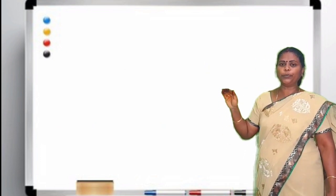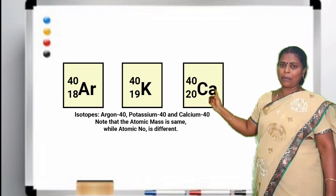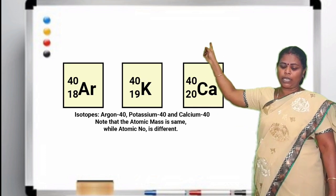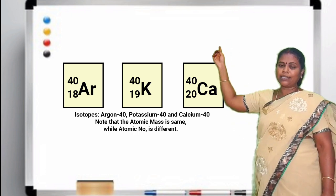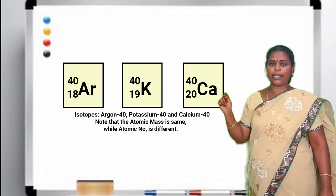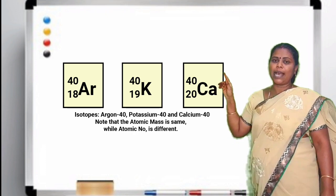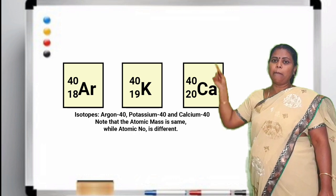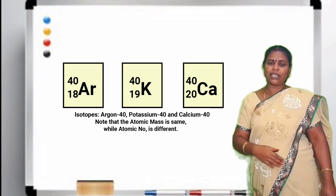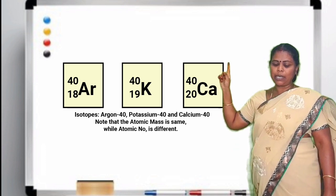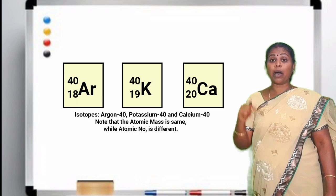Next example: potassium with atomic number 19 and mass number 40, and chlorine with atomic number 17 and mass number 40. Here both have different atomic numbers — 17 and 19 — but the mass numbers are the same, both being 40. So atoms which have the same mass number but different atomic numbers are called isobars.